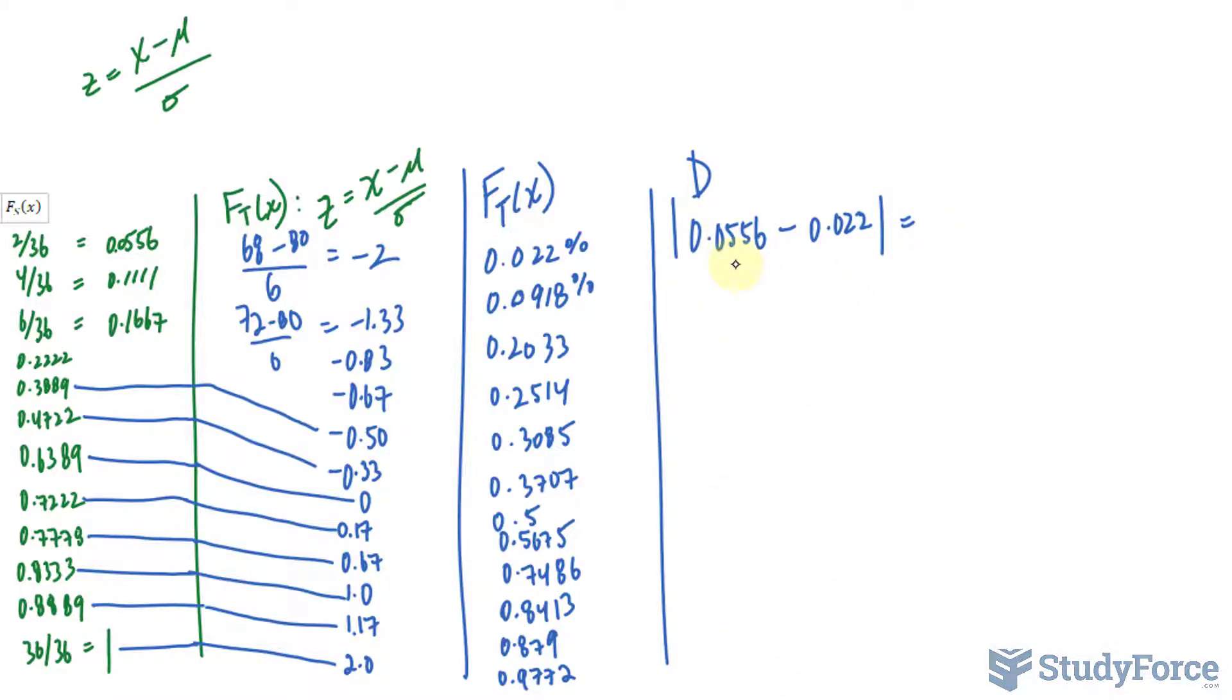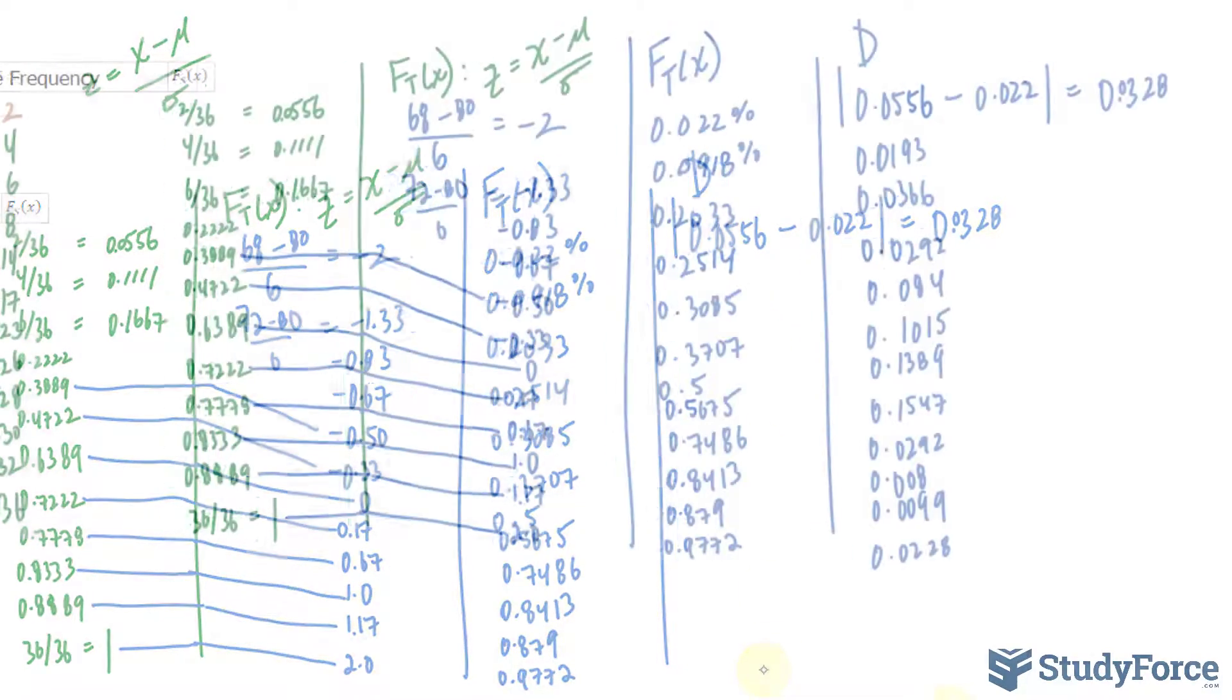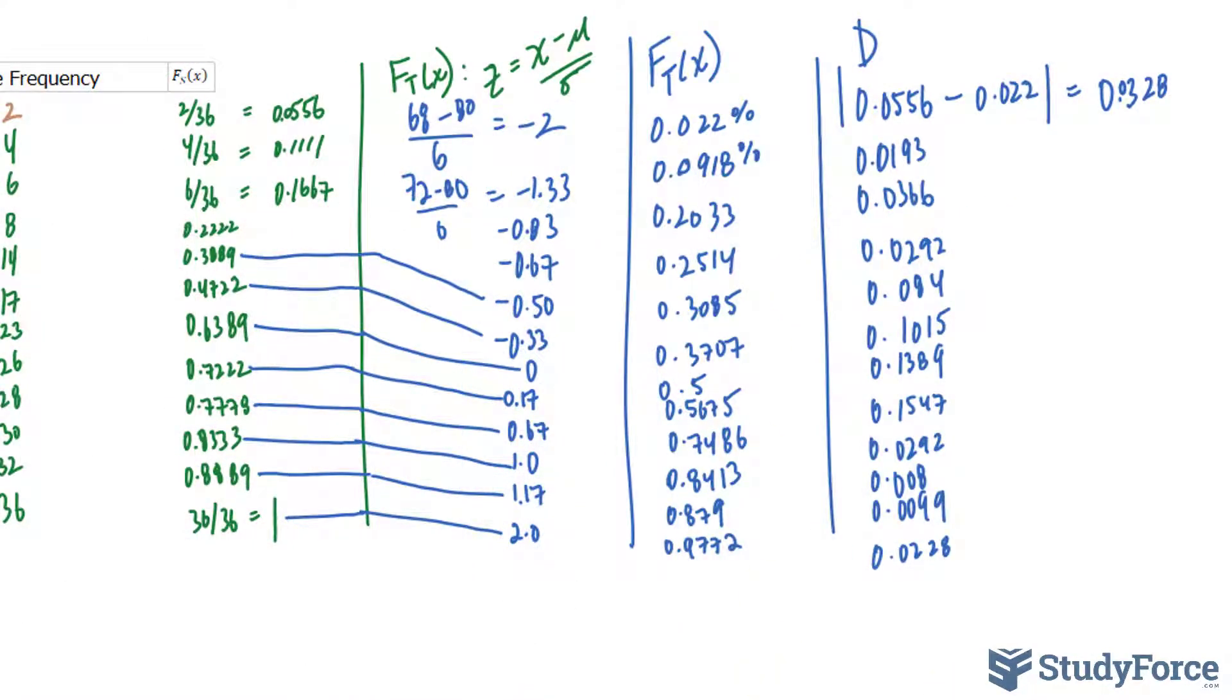Once you've calculated all these D values, the greatest one in the whole group is the one that you designate for D. So let me show you the D values for each of these observations. This one is 0.0328, and the rest are the following. On your screen are the D values that I just calculated. The greatest one, the supreme value, is right here. It is approximately equal to 0.16.